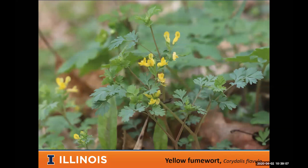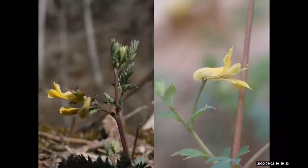Another early one is corydalis — I think 'fumewort' is an ugly name so I just call it corydalis. There are several species; the pale yellow corydalis tends to be the more common one. It has a beautiful and unusual-looking flower with feathery, fern-like leaves. It's not a very big plant and never forms really dense patches — usually interspersed with other wildflowers.